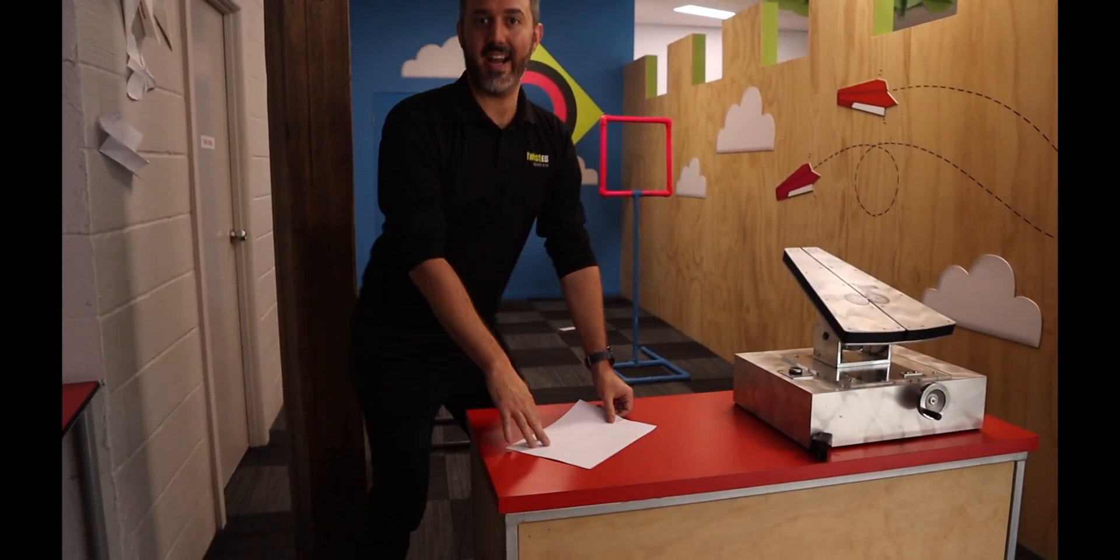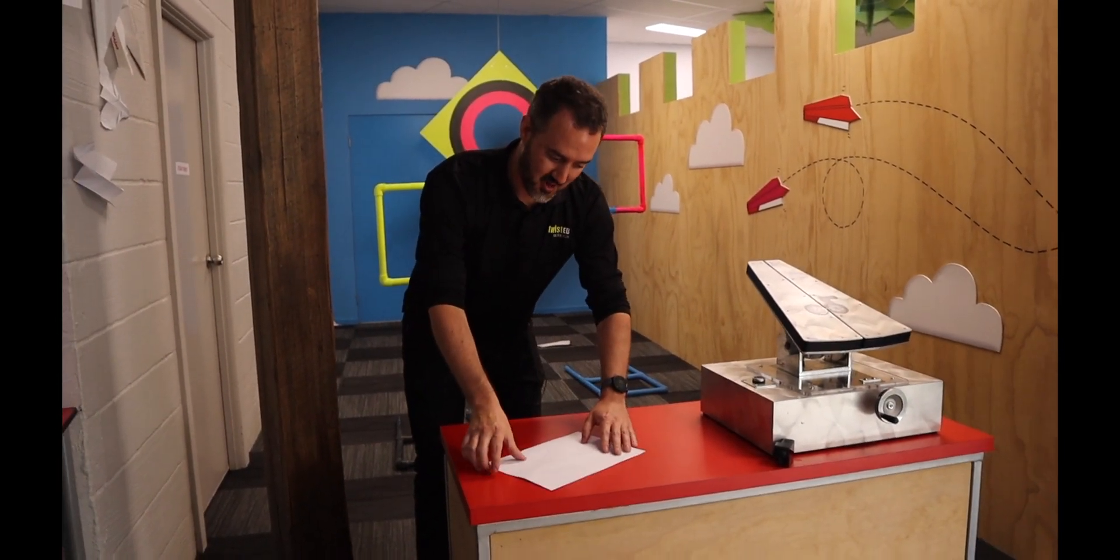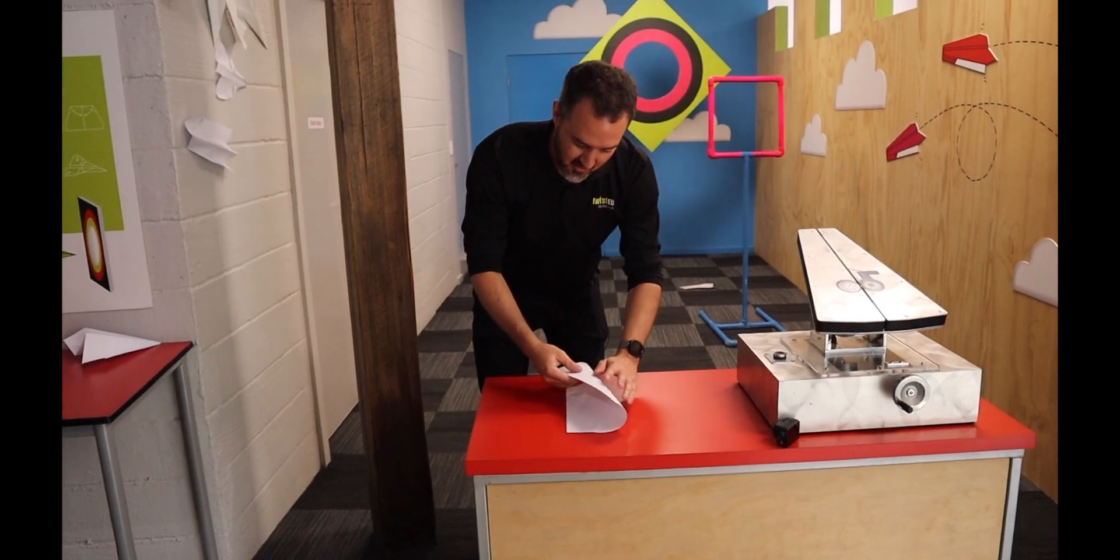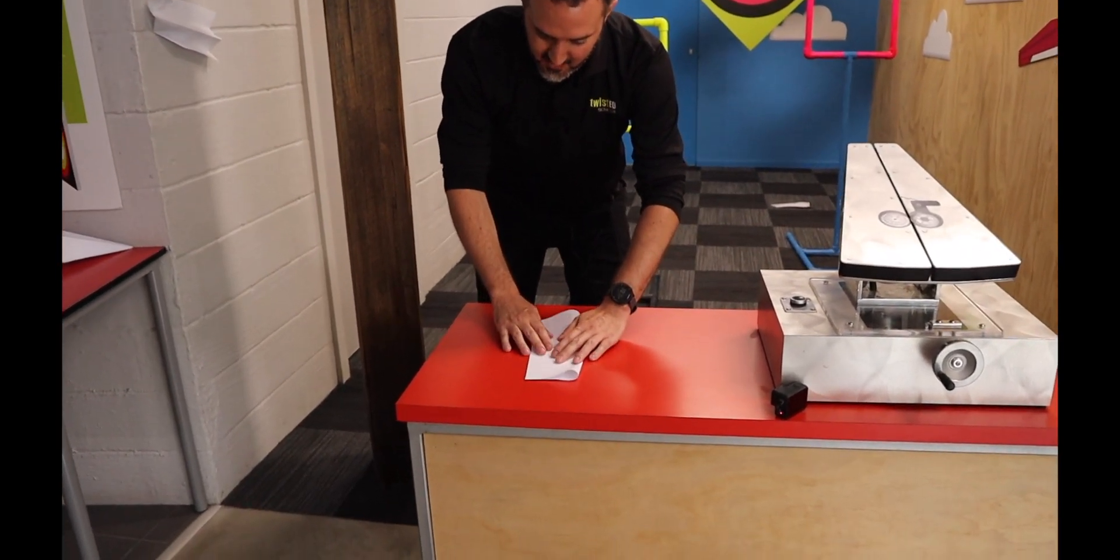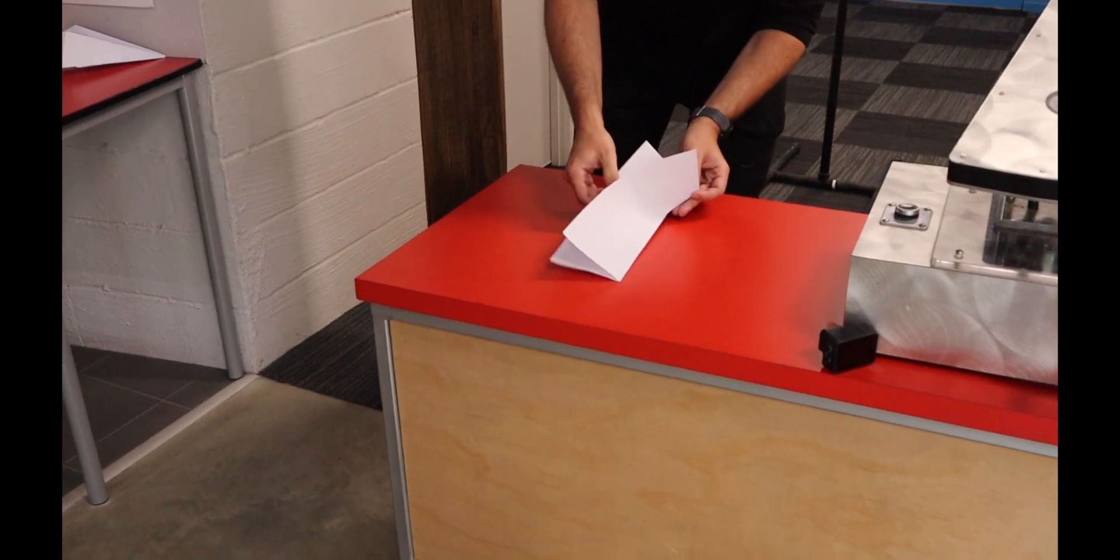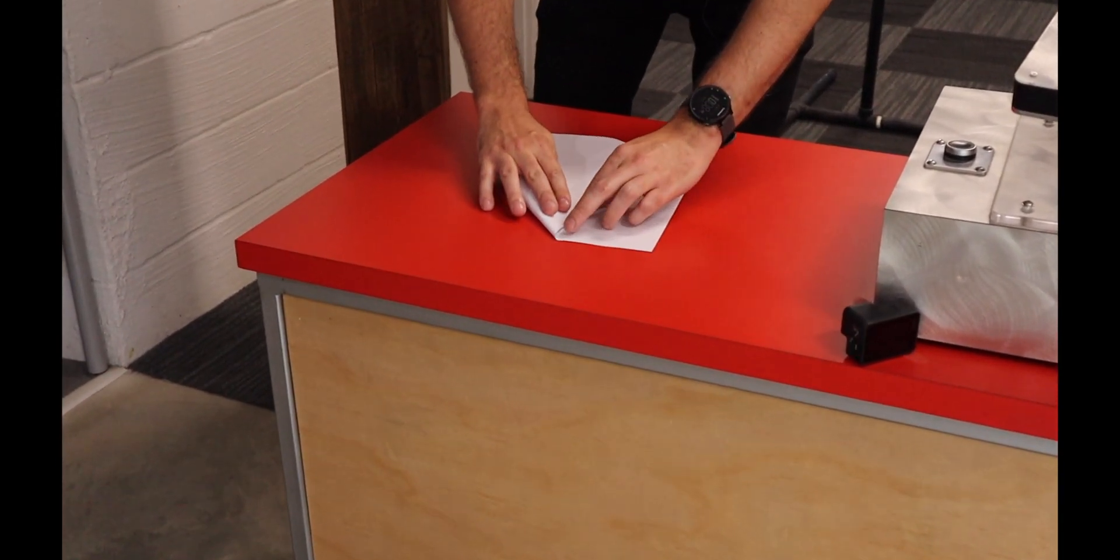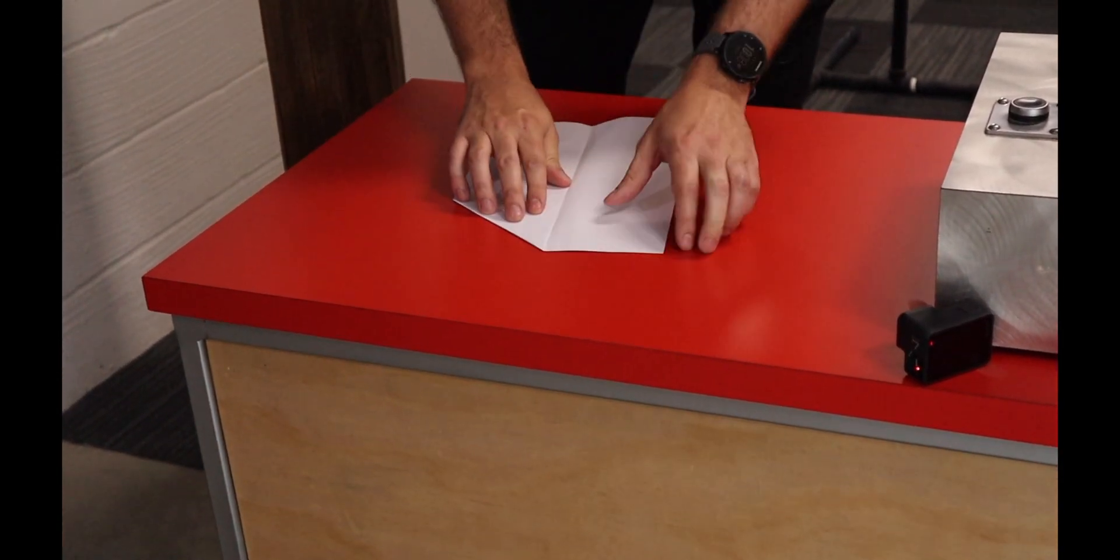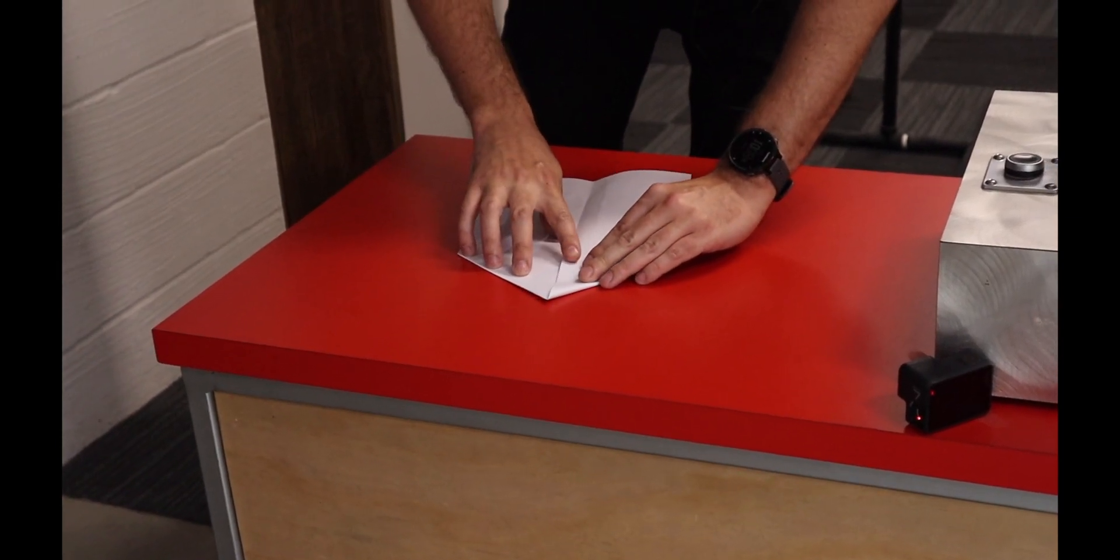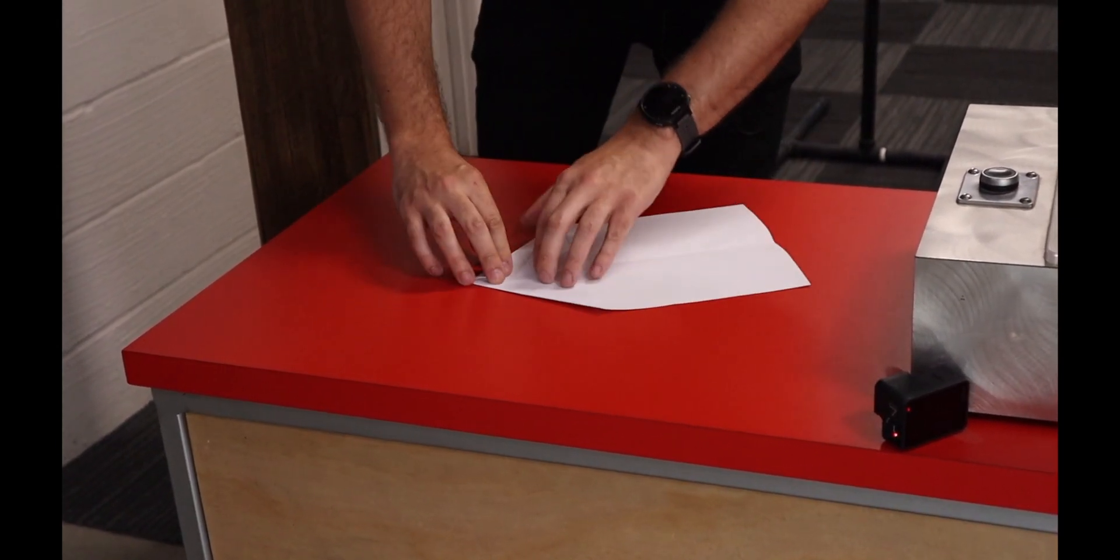Alright, now we're going to make our plane over here. So we're going to fold it like this way, in half lengthwise. Pick it up. We're going to make some triangles - one triangle that way, triangle this way.